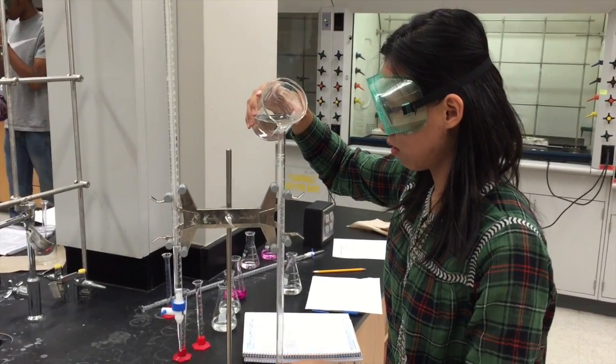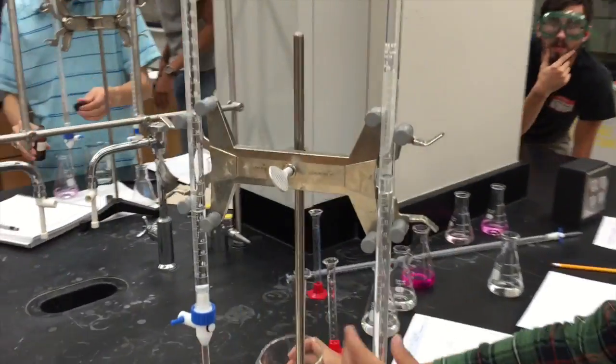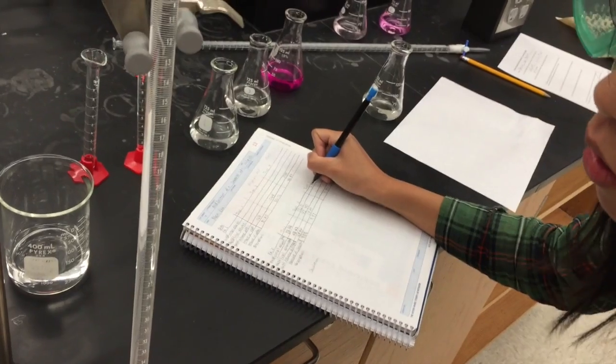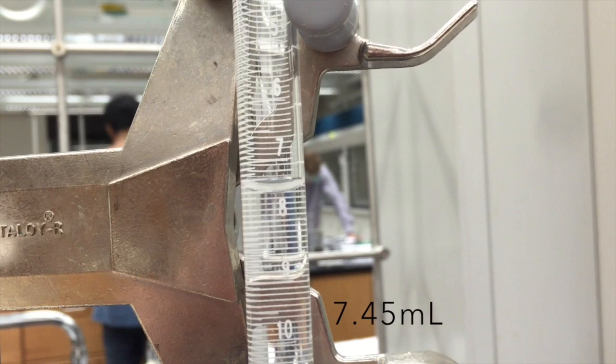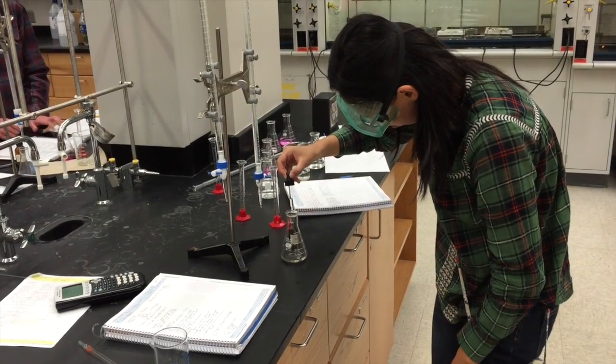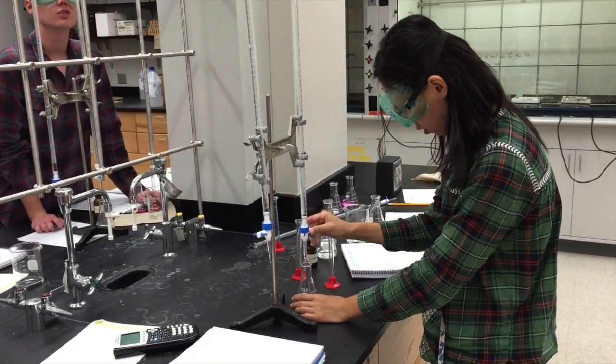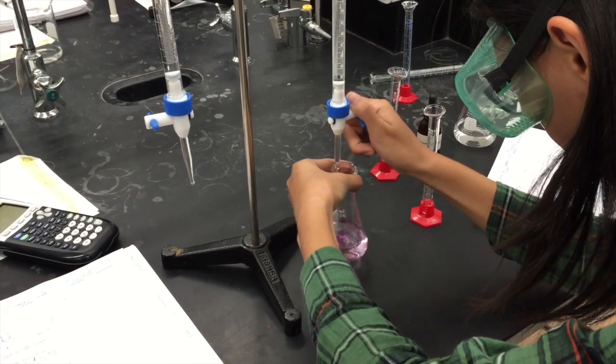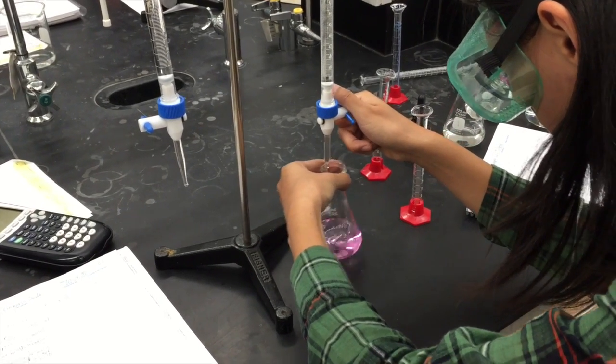In a titration, the solution of known concentration is referred to as the titrant, whereas the solution of unknown concentration is referred to as the analyte. We use titrations to determine the concentration of the analyte by slowly adding some volume of the titrant until a neutralization reaction occurs, usually shown by a color change.